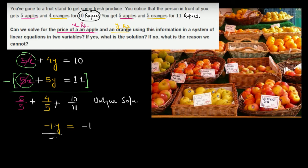Dividing both sides by negative 1, we get y equals 1. So y equals 1, and y represents the price of one orange, which is 1 rupee.